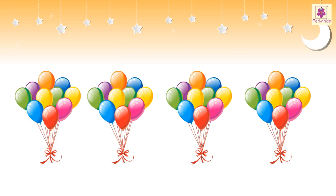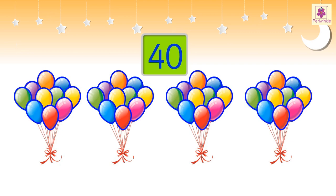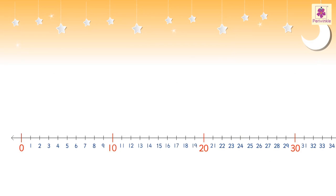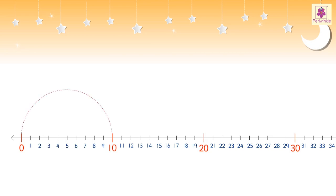Thus we get 10, 20, 30, and then 40. Hence there are 40 balloons altogether. Skip counting by tens can also be done using a number line. Here we skip nine numbers and jump to the tenth number.